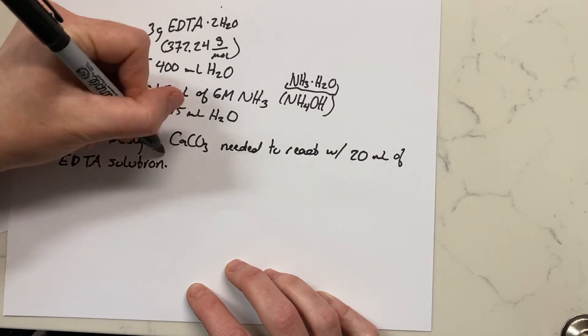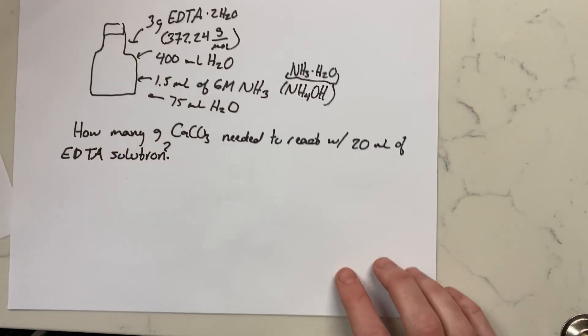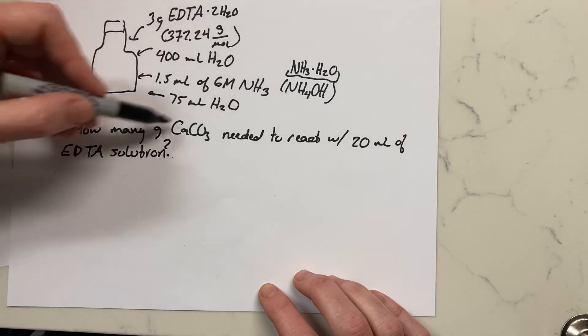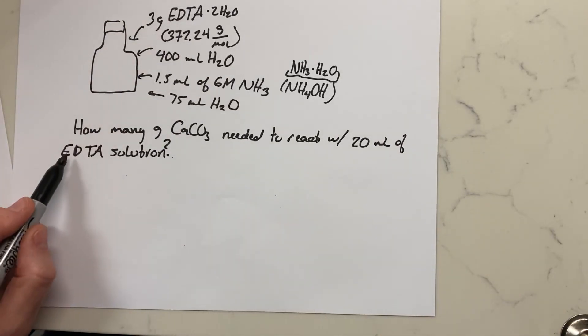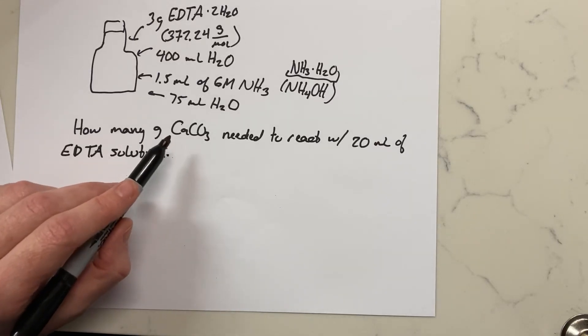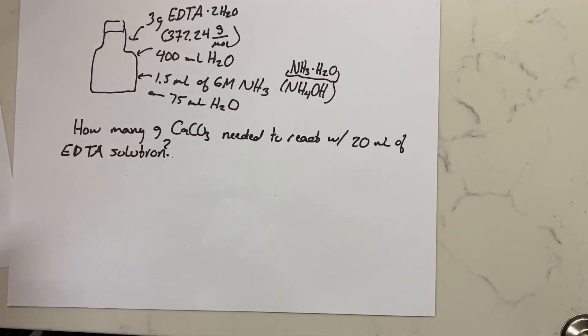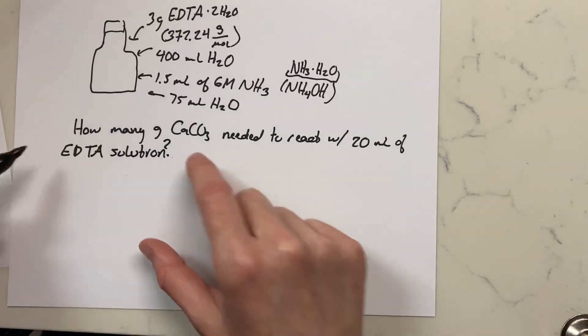Well, we know that EDTA takes on a one-to-one ratio, so for every one mole of EDTA it will bind with one mole of calcium. So we essentially can just figure out how many moles would be in that 20 milliliters.